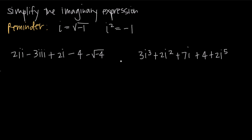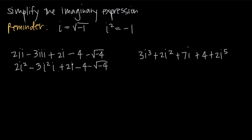Now we can use these definitions to simplify imaginary expressions. In this first example, we have 2 times i times i, which we rewrite as 2i squared. Then minus 3 times i times i times i, which is minus 3i cubed — written as minus 3i squared times i. We also have plus 2i, minus 4, and then minus the square root of negative 4. We know i squared equals negative 1, so we can plug in negative 1 wherever we see i squared. For the square root of negative 4, we note that negative 4 equals negative 1 times 4.